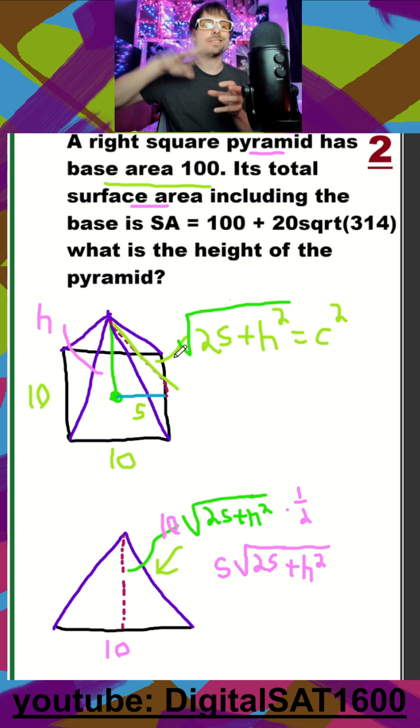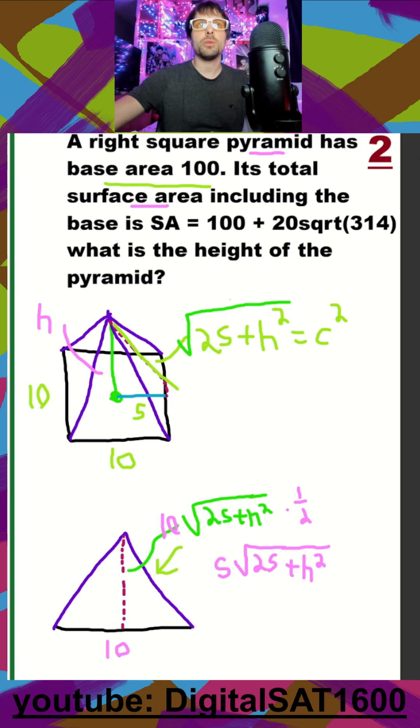And then again, we want to apply this singular triangular face to all four, right? There's one in the back, left, right, and center. So if I multiply this by four, what that should get me is my total surface area of all my triangles, which they did separate up above.